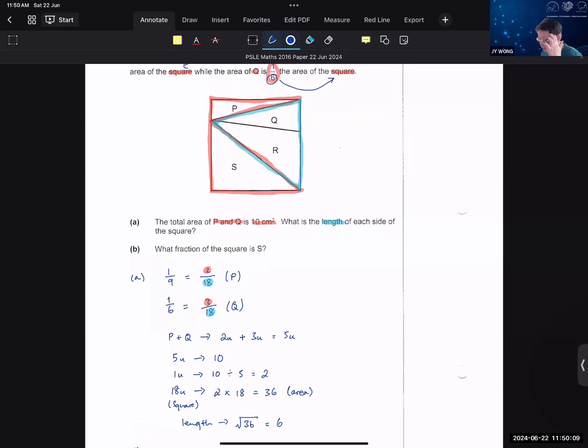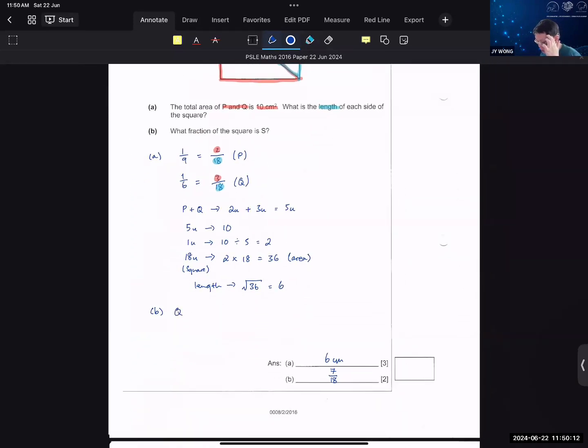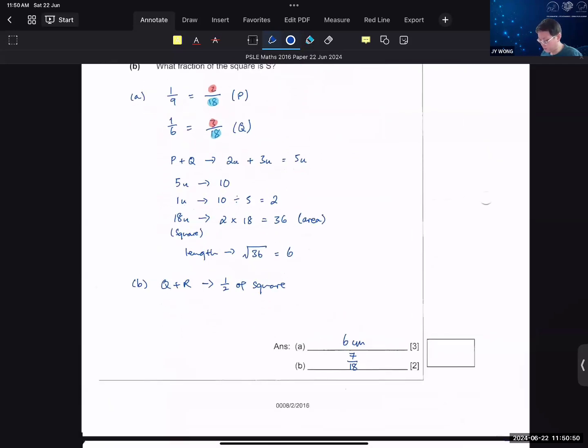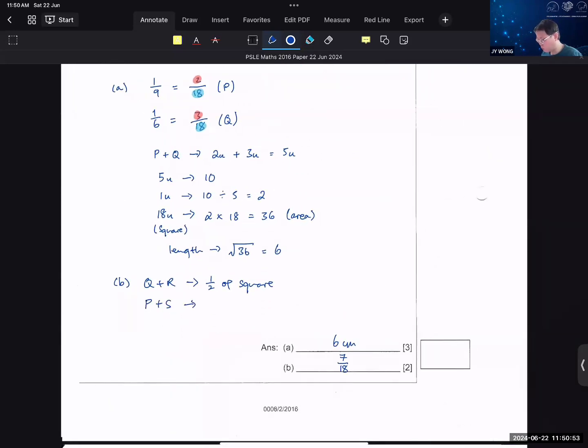From the diagram, you have to be able to see your area Q plus area R is equal to half of your square. When you have a triangle where the base covers the entire length of the rectangle or the square, and the height covers the breadth, or vice versa, in this case, the base covers the breadth while the height covers the length, it will always give you half of the area of the square or the rectangle. So your Q plus R is always going to be equal to half. And because your Q plus R is equal to half, that will mean that your P plus S is also equal to half.